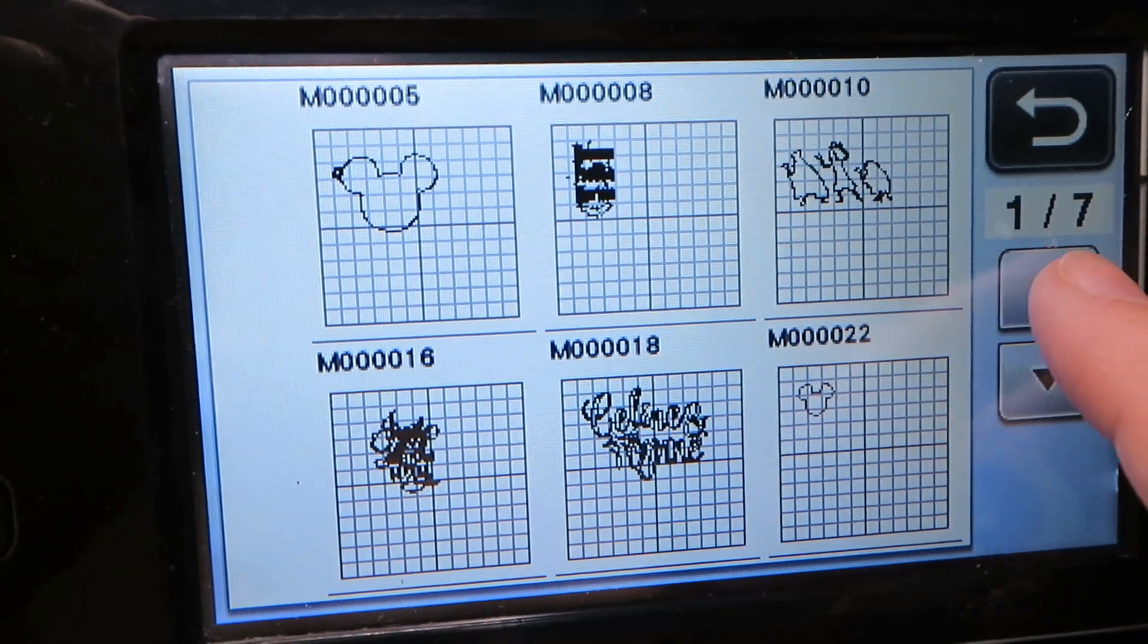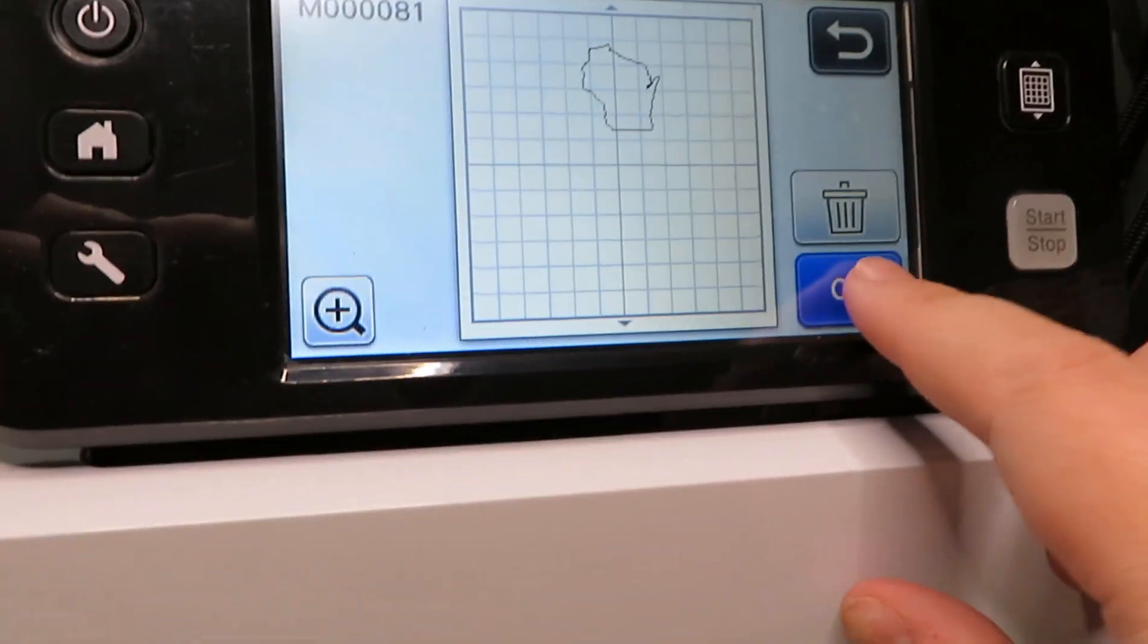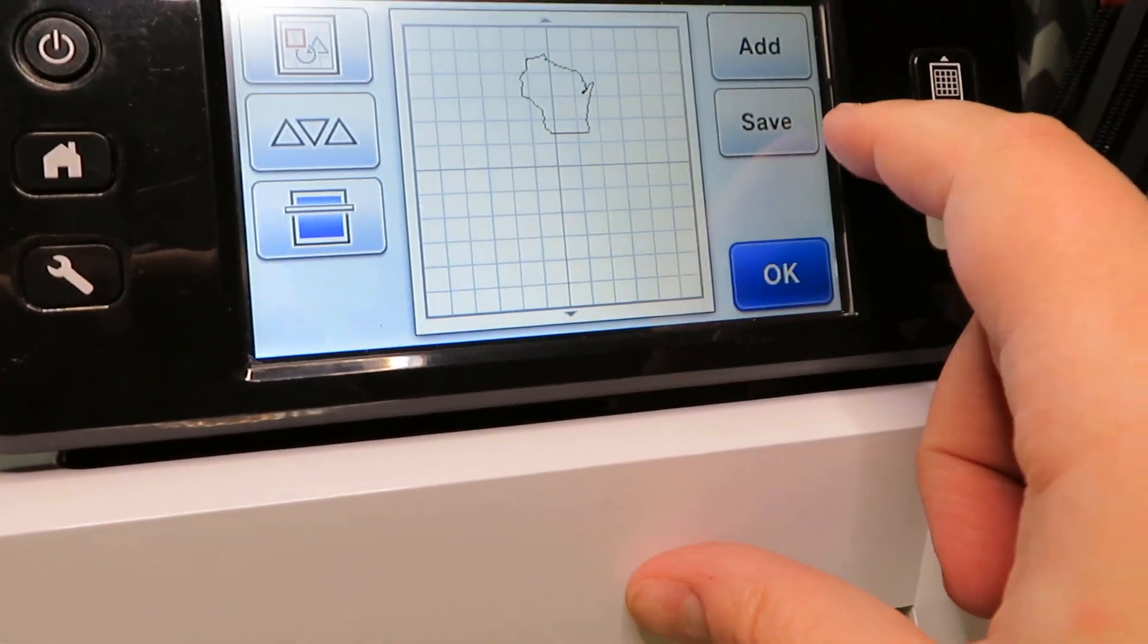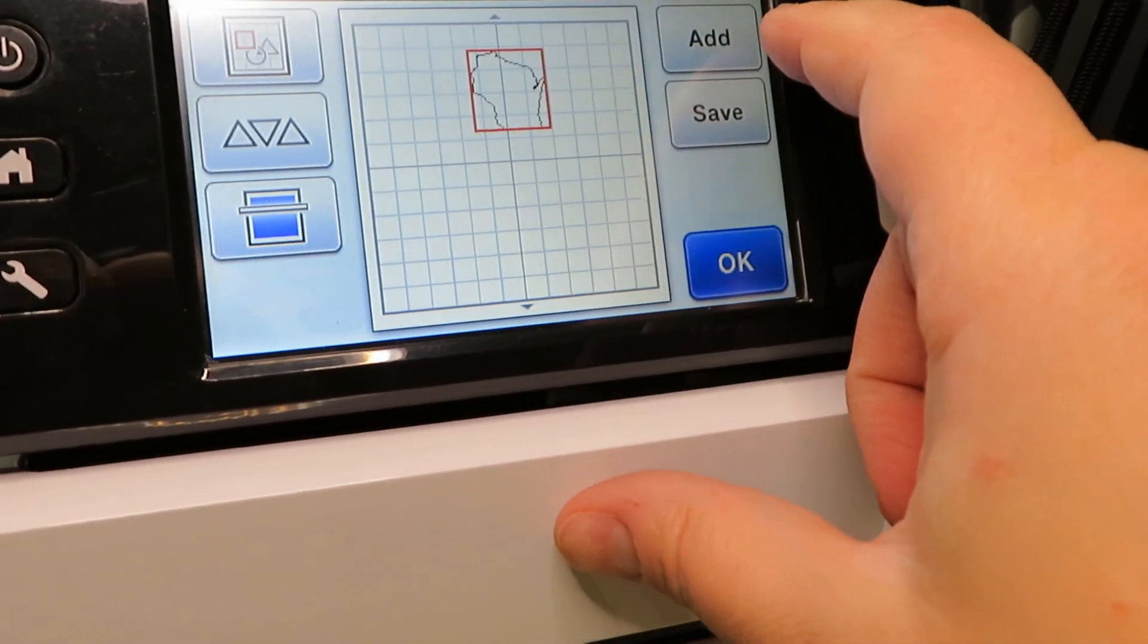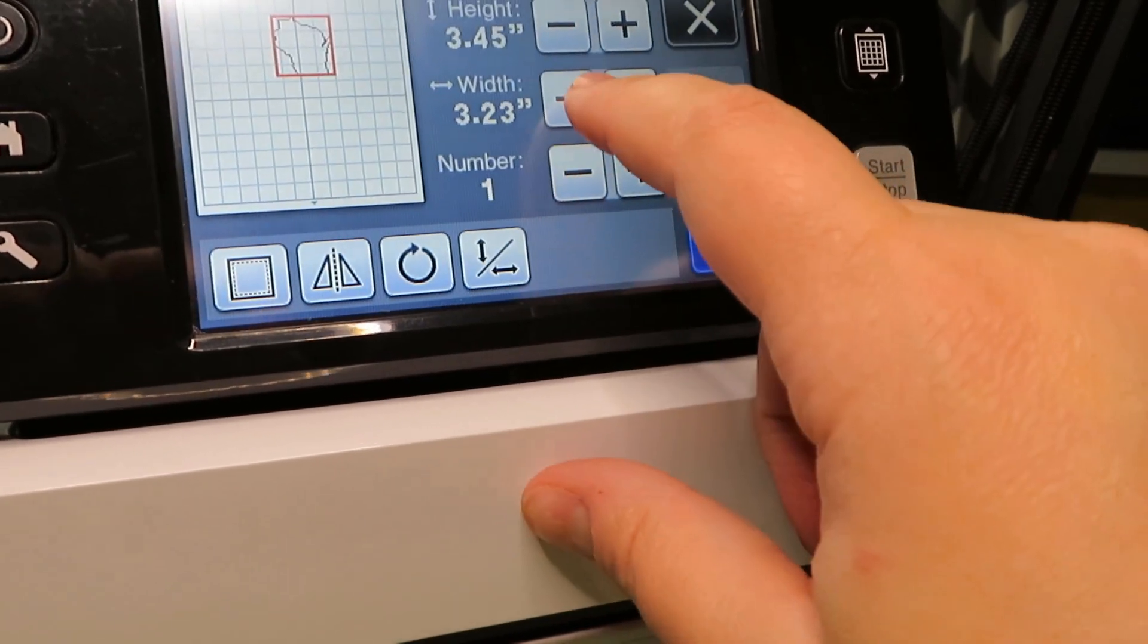Now I'm gonna link below a video if you want to learn how to do this. It's really easy. I found the outline of the state of Wisconsin. If you've watched other cards, it was something that I had already done, so I'll link that video. What I can do is take this state and I can resize it.